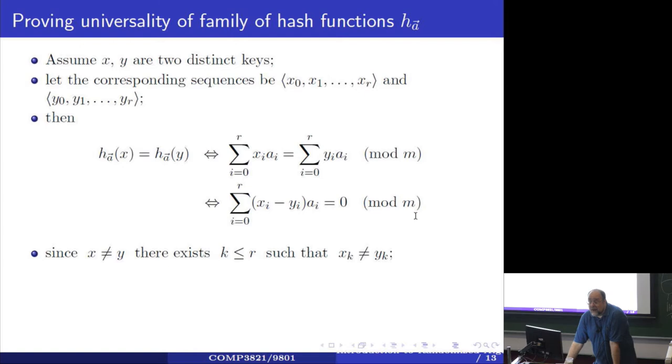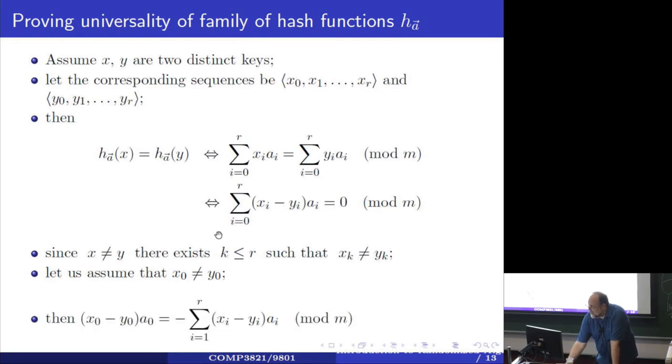Now x and y are two distinct keys. So then at least one of the digits of x has to be distinct from the corresponding digit of y. Without loss of generality, let's assume that's on the first place, a_0, because the argument is absolutely identical if the difference is anywhere else. Then what you can do is keep only fixed this value when they are distinct, say this is x_0, y_0, and move all other elements that partake in this sum to the other side of equation. So then you get that this product is equal to this sum mod m.